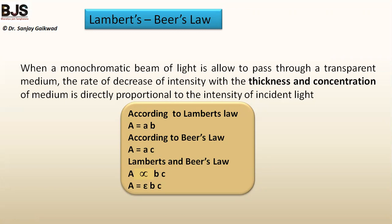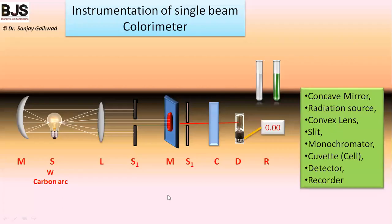According to Beer's law, when a monochromatic beam is allowed to pass through a transparent medium, the rate of decrease of intensity with the concentration of the medium is directly proportional to the intensity of incident light. So A equals a×c, where c is the concentration. Combining both laws gives A = εbc, where b is the thickness of the cell, c is the concentration, and ε is the molar absorptivity.